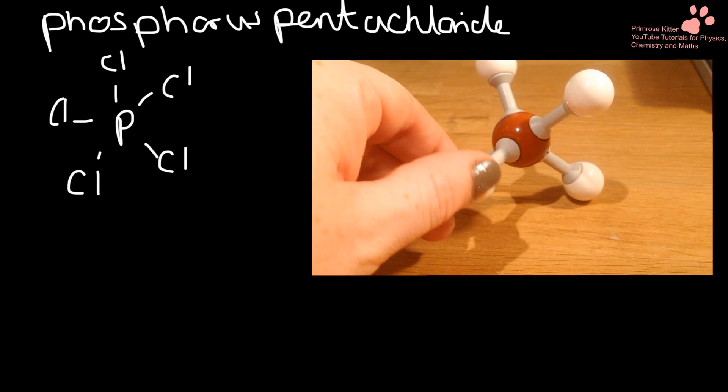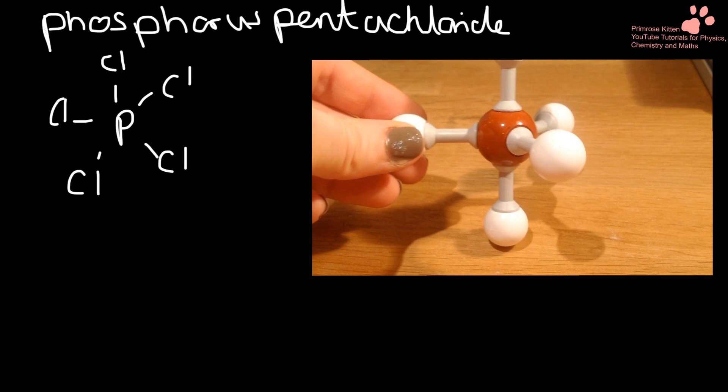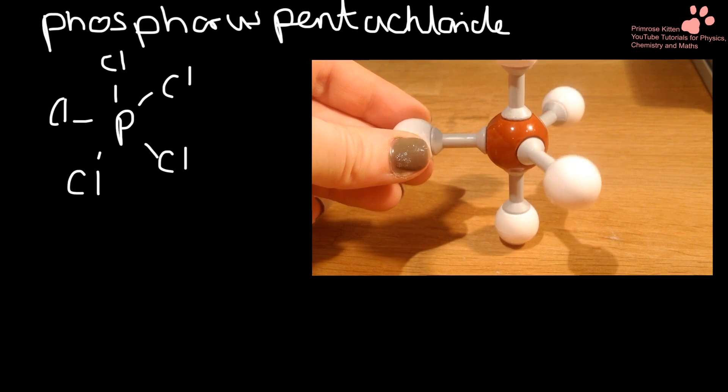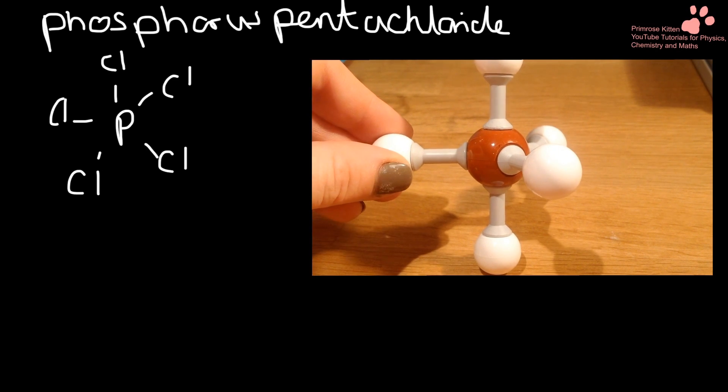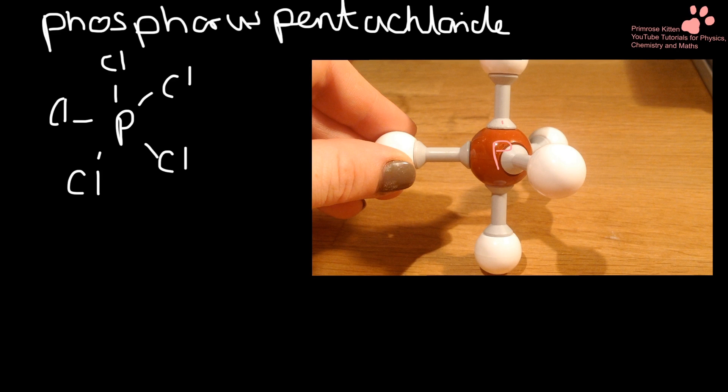Phosphorus pentachloride in terms of drawing and learning things is actually quite a nasty molecule because it does not obey the octet rule. It has different bond angles and it is a large and complicated shape. So let's start in the middle here. We have our phosphorus. Then we have a chlorine in plane. Another chlorine in plane. Another chlorine in plane. We have one coming out towards us. And we have one going behind away from us.